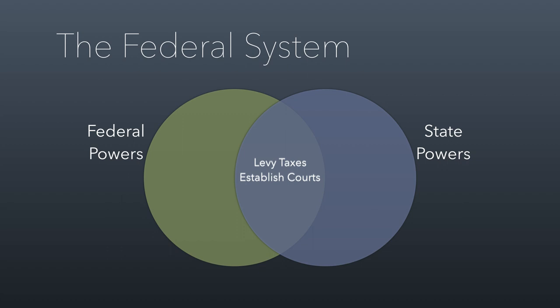There are a lot of other federal powers, but I want to focus on one that's important to nonprofits, which is that the federal government can regulate what's called interstate trade — any time that business is being done across state lines. This is a unique federal power. This is, for example, why you're not charged sales tax when buying something from another state, because state sales taxes cannot cross state borders. Only the federal government can regulate trade that happens over state lines.